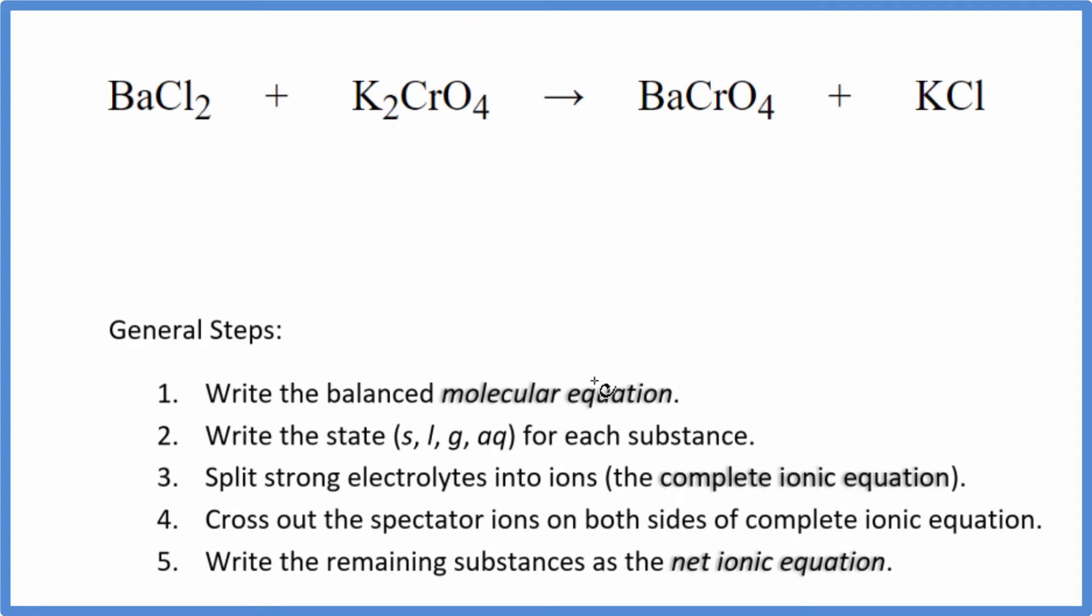When we do this, the first thing we have to do for net ionic equations is balance the molecular equation. I can see I have two potassium atoms here, just one here. Let's put a two here, and that looks like that balances the equation. We have a chromate here and here, that's good. Barium here, barium here, two chlorine atoms on both sides. So that's the balanced molecular equation.